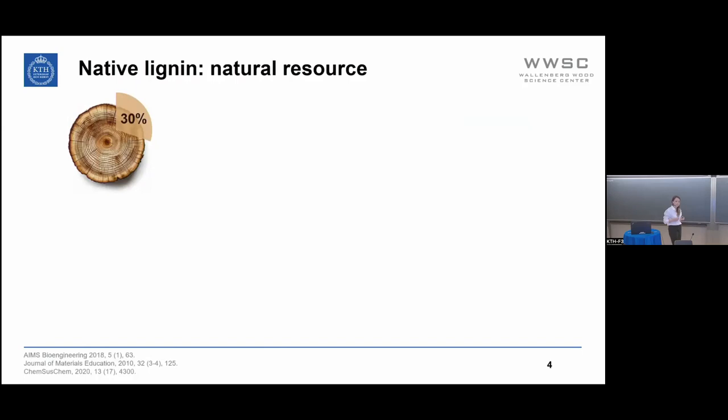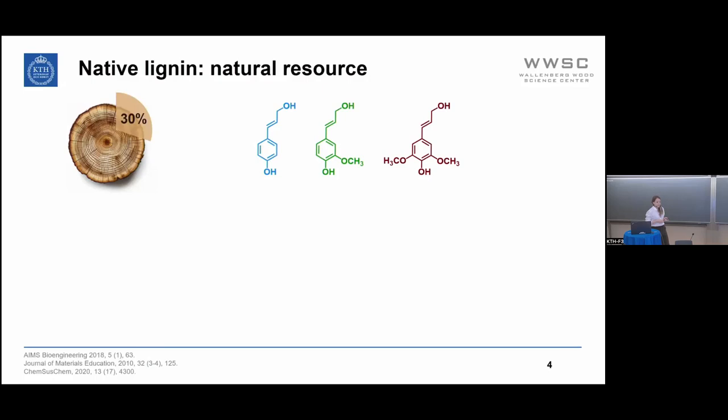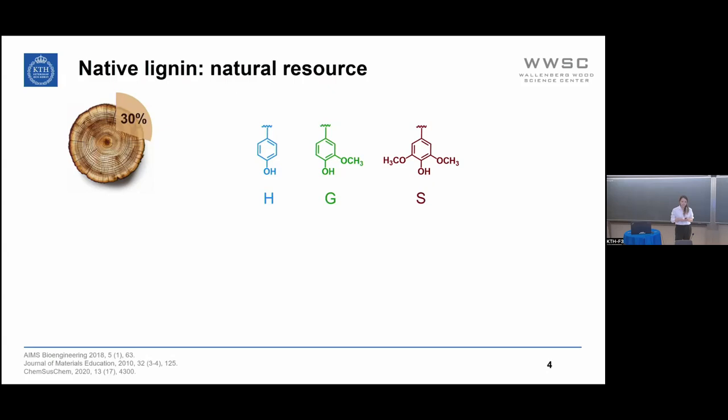What is lignin? Lignin is a natural resource — an aromatic biopolymer which can be found in wood and represents up to 30% by weight of the dry content of wood. It is biosynthesized by the random radical coupling of three monolignols: paracoumaryl alcohol, coniferyl alcohol, and sinapyl alcohol. When incorporated into the lignin backbone, they generate the free lignin units, which are called H, G, and S.